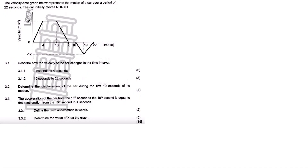We are focusing on this part of the graph from 0 to 4 seconds. We can say that the velocity increases uniformly — it's going steadily up — from 0 to 20 meters per second north in 4 seconds. We are describing how the velocity is increasing (uniformly), from what velocity to what velocity, the direction, and the time. So we are covering everything, leaving nothing to chance.